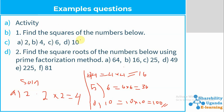We are going to solve number one in activity one, which asked us to find the squares of numbers. When they talk about squares of numbers, that is totally different from finding the square root. That's why in number two they say: find the square root of the numbers below using prime factorization. We try out a variety of methods to find these square numbers — they are already square numbers, but they want us to find how they became square numbers.